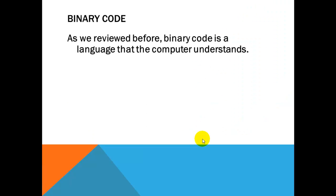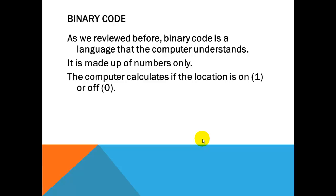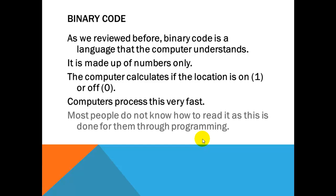Now, as reviewed before, binary code is the language that the computer understands. It's made up of numbers only. There are only two numbers involved. It is either on, which is a one, or off, which is a zero. And computers will process this very fast. Most people do not know how to read it. And if you think about this, if we were required to read binary code in order to operate the computer, very few people in our society would be able to do it. But this is all done already for us through programming.